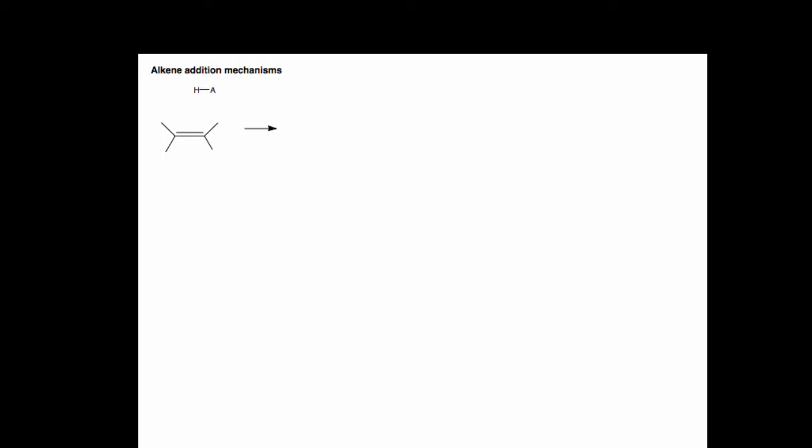One common electrophile with which they react is a proton. This is one of our elementary steps in which a pi bond acts as the nucleophile, adding an electrophile to a non-polar pi bond. This would create a carbocation intermediate.